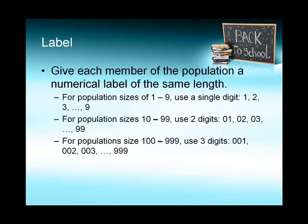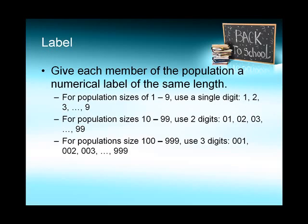To label, you give each member of the population a numerical label of the same length. For population size 1 to 9, you're going to use a single digit: 1, 2, 3, 4, 5, 6, 7, 8, 9. For populations of size 10 through 99, you're going to use two digits: 01, 02, 03, all the way up to the largest number in your population.